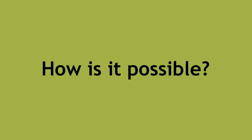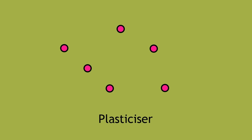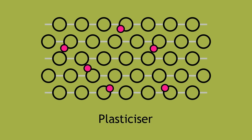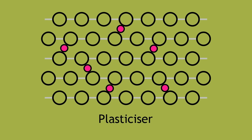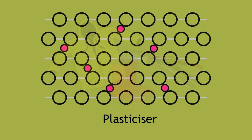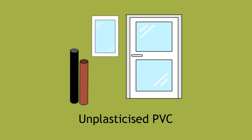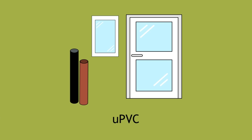This is made possible by a plasticizer. When you add a plasticizer to PVC, it makes it softer and more flexible. The raincoat, rain boots, and the wiring insulation are made of plasticized PVC. The harder PVC materials are made of unplasticized PVC, or UPVC.